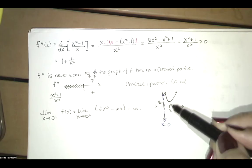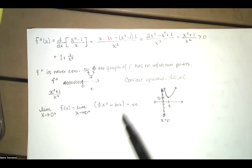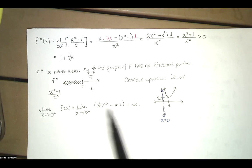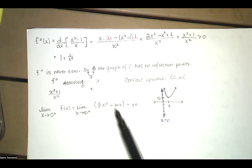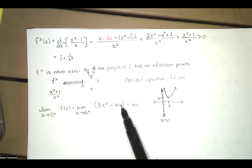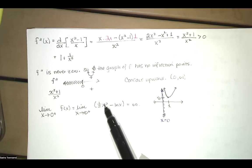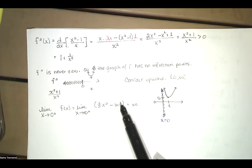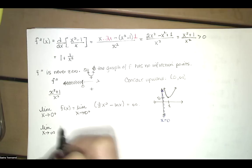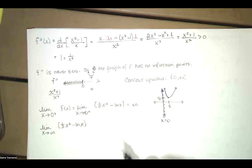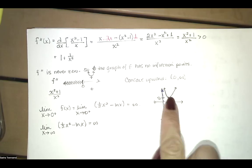As x approaches 0 from the right, y values go to positive infinity. As x goes to positive infinity, we have an infinity minus infinity indeterminate form, but one half x squared grows much faster than natural log of x since the slope of the quadratic term is x while the slope of natural log of x is only 1 over x. So the one half x squared dominates, and f of x goes to positive infinity as x goes to infinity.